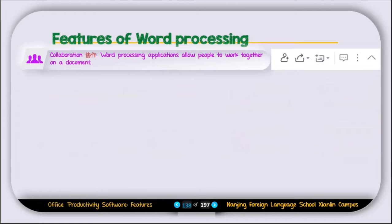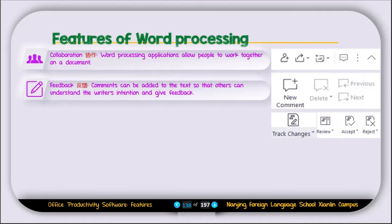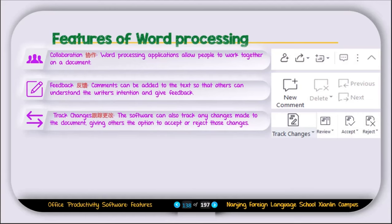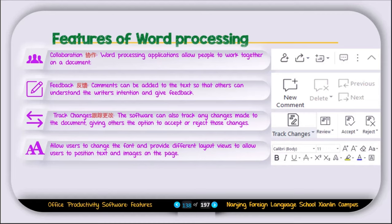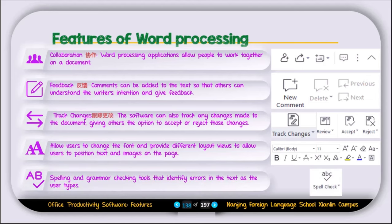Now let's talk about some features of word processing software. The first feature is collaboration — word processing applications allow people to work together on a document. Second is feedback — comments can be added to the text so others can understand the writer's intention and give feedback. Next is track changes — the software can track changes made to the document, giving others the option to accept or reject those changes. Users can also change fonts and use different layout views. The last and very powerful feature is spelling and grammar checking, which identifies errors in the text as the user types.